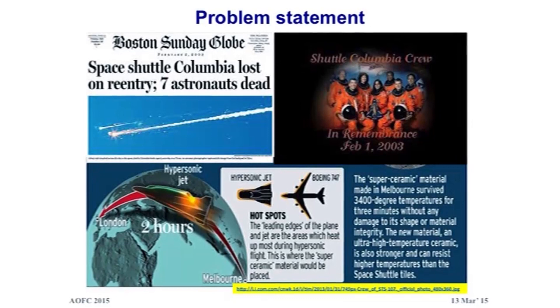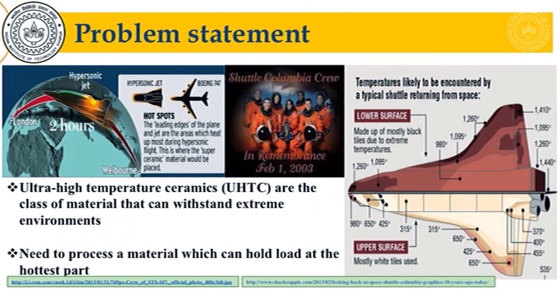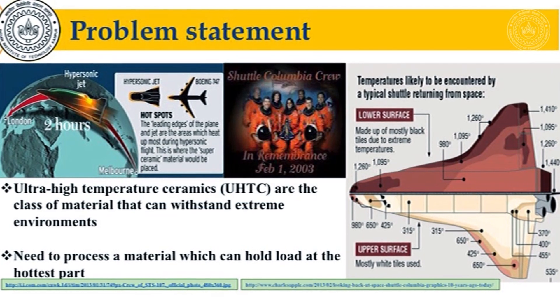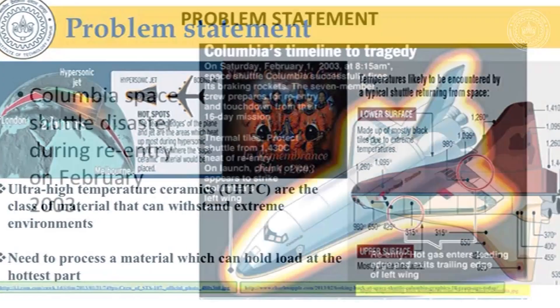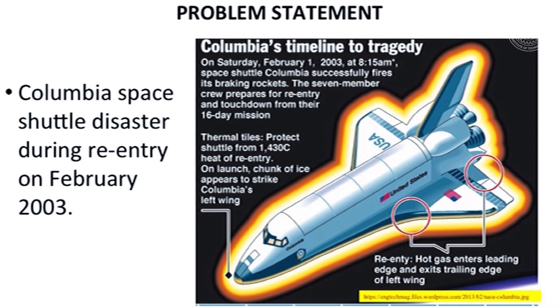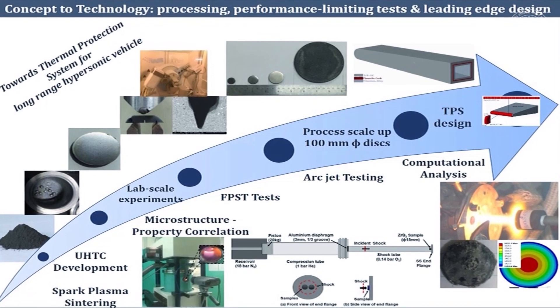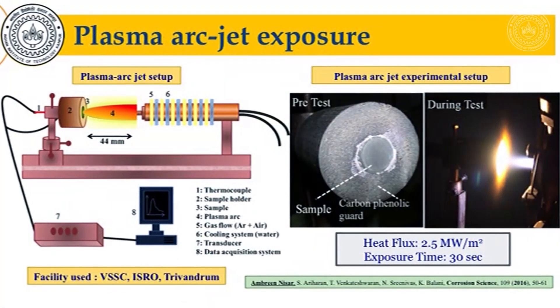When a spacecraft re-enters the earth's atmosphere, it experiences very high temperatures and very high speeds — temperatures exceeding 1200 degrees centigrade and speeds exceeding around Mach 10. This imposes a very severe condition on the material. That is where a special class of ceramics called ultra-high temperature ceramics comes to the rescue, avoiding hot spots and withstanding the heat and rigour of re-entry.